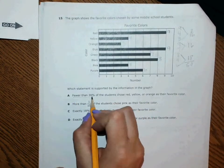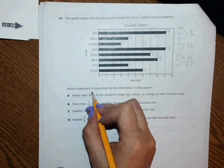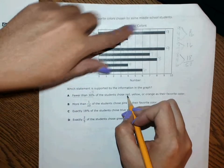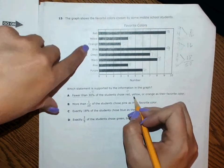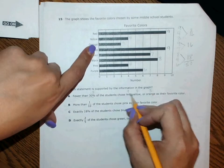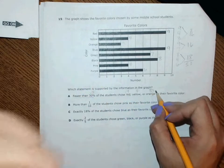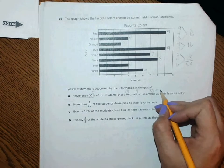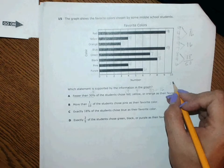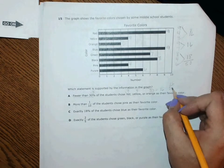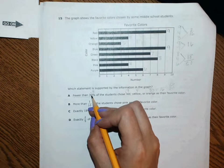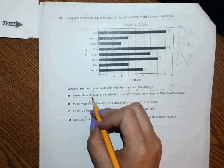Fewer than 30 percent, so we also know we can change that into 0.3, chose red, yellow, or orange. Red says 9, yellow is 4, and orange is 3. That means we're combining these. Okay, so when we add those together we get 16, and remember that's 16 out of 50.